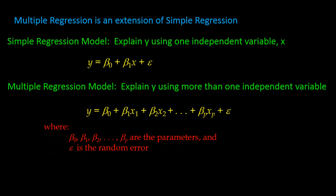Looking at the multiple regression equation, we have multiple x's and each has its own slope associated with it. There is only one beta-naught, only one y-intercept for the multiple regression model. That would be the value of y when all the x variables are zero.